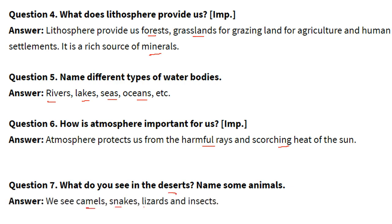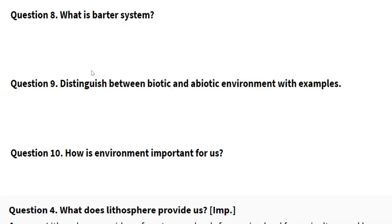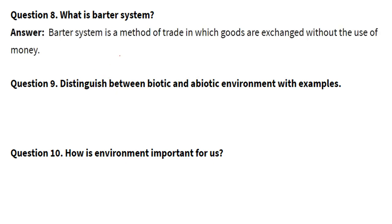What is the barter system? The barter system is a method of trade in which goods are exchanged without the use of money. There is no transaction of money — one good is given and another good is taken.